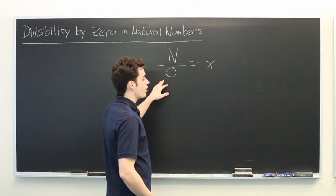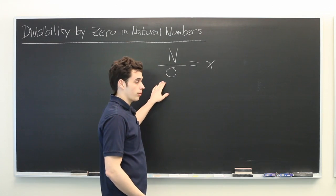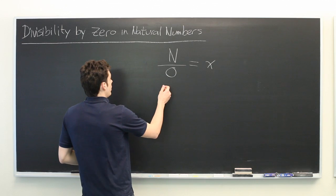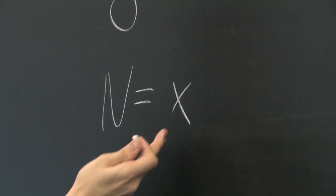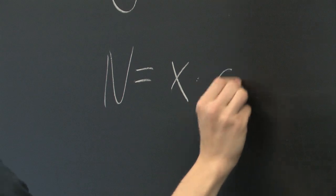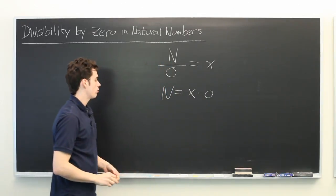You think of division as the inverse of multiplication. What this is really asking is what x times zero will achieve this natural number n?